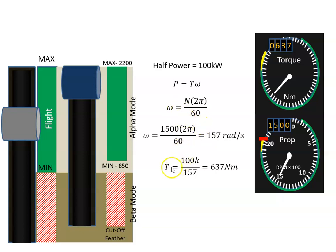We can work out the torque. If we have half power, 100 kilowatts divided by 157 is 637 Newton meters, so that would be our torque value.